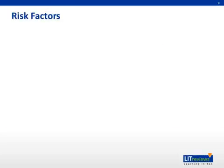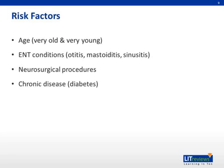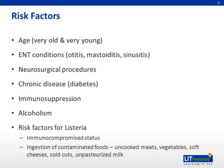Some of the risk factors for meningitis include age — you'll see it more commonly in the very old or very young, though you can also see it in adolescents. ENT conditions such as otitis, mastoiditis, and sinusitis are at increased risk for spread to the meninges. Neurosurgical procedures, chronic disease, and diabetes with immunocompromise also increase risk. Alcoholics and anyone with risk factors for Listeria — including immunocompromised patients, the elderly, the young, and those who have ingested contaminated foods such as uncooked meats, vegetables, soft cheeses, cold cuts, and unpasteurized milk — are also at increased risk.